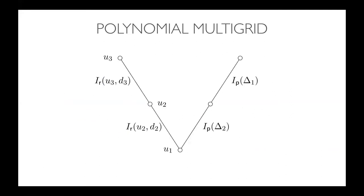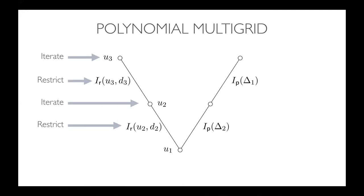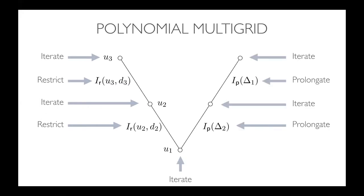Here's what a polynomial multigrid cycle looks like — a three-level V-cycle. At the top is U3, the solution on cubic polynomials. We do some iterations at the finest polynomial degree, then restrict down to quadratic, then to linear, doing iterations as we go down, then prolongate the correction back up, again doing iterations as we go back up. The goal is to do as much work as possible on lower polynomial degrees, where it's extremely cheap relative to the higher degree.